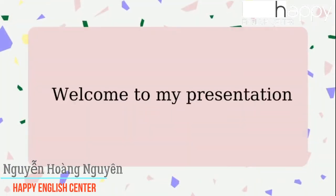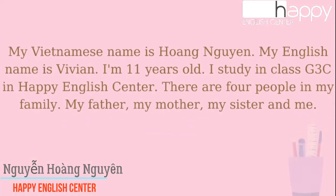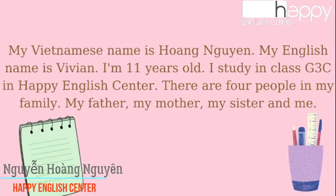Hello everyone, welcome to my presentation. My Vietnamese name is Hoan Nguyen. My English name is Vivian. I'm 11 years old. I study in Lodgy Prissy in Pabi English Center.